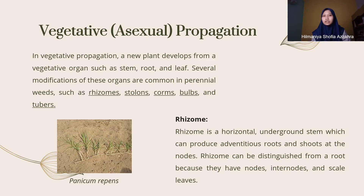A rhizome is a horizontal underground stem which can produce adventitious roots and shoots at the nodes. Rhizomes can be distinguished from roots because they have nodes, internodes, and scale leaves. An example is Panicum repens.